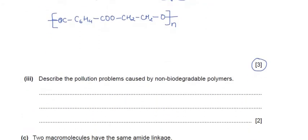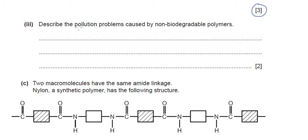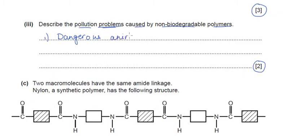The next sub-question asks us to describe the pollution problems caused by non-biodegradable polymers. We need to mention only two problems as it carries two marks. First, it is dangerous to animals — when animals eat such polymers they may have choking or other problems which may lead to them dying. Second, they evolve poisonous gases when burnt.